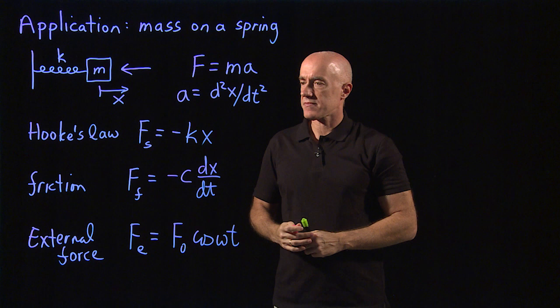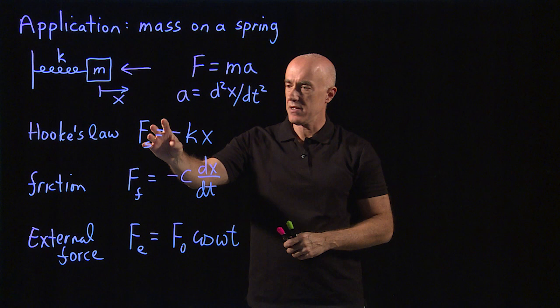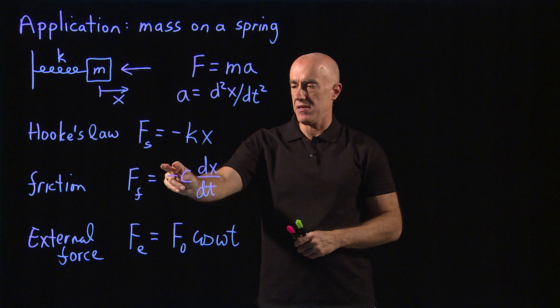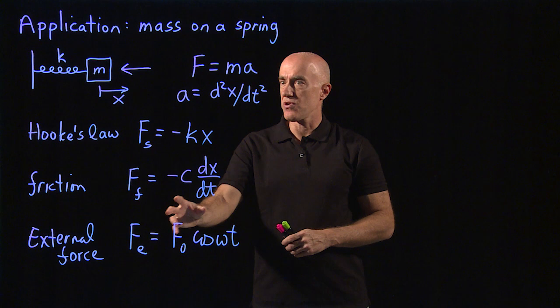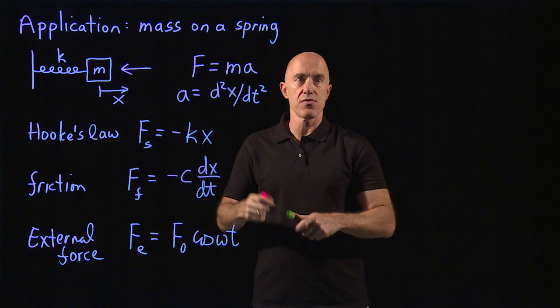So this is the physics. F equals ma, Hooke's law for the spring modeling the force due to the spring. Friction, the force is opposing the motion proportional to the velocity, but opposing the velocity, causing the mass to slow down. And an external force. So those are our F's, and that's equal to mass times acceleration.